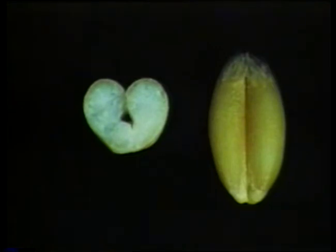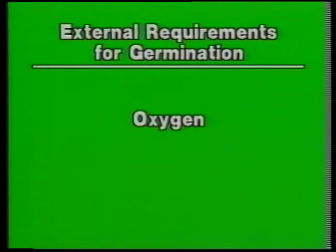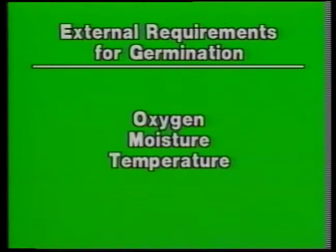A short period of storage or after-ripening is needed to alleviate dormancy and obtain maximum germination potential. Even viable non-dormant seeds may not germinate if external requirements for germination are not present. External requirements vary among crop species and include correct oxygen, moisture, and temperature.